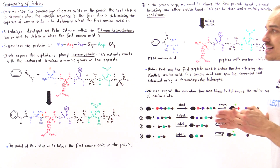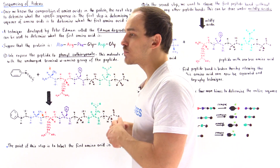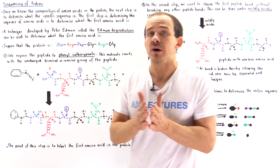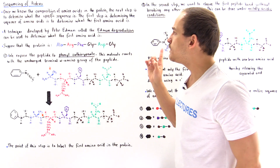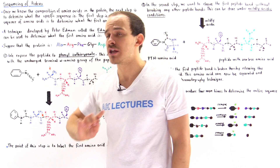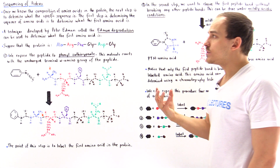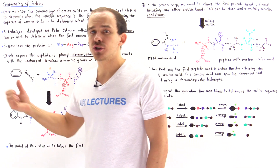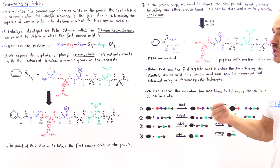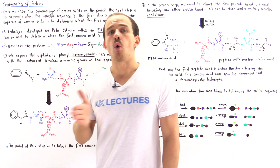The Edman degradation process is only useful up to a certain protein size. If the number of amino acids is around 1000, this is not a very useful process. In the next lecture, we'll see how we can determine the sequence of amino acids in larger proteins. The Edman degradation usually works on proteins that are about 50 amino acids in length or less.